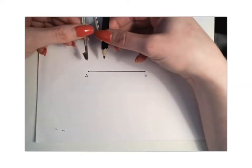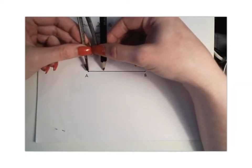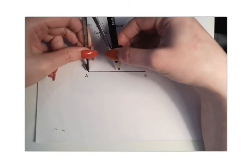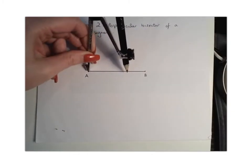So what we're going to do to start is place your compass at point A and stretch your compass to more than halfway along your line segment.